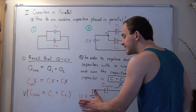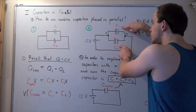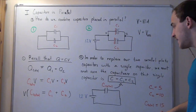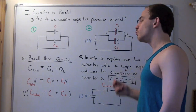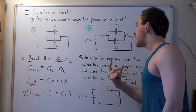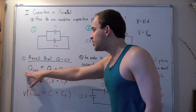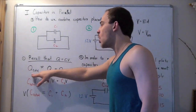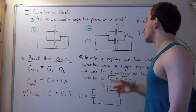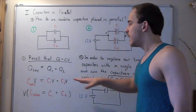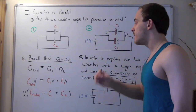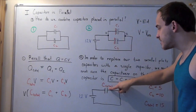My battery stays the same at 12 volts, and I replace the two capacitors with a single capacitor with C_total of 15. The voltage on this new capacitor remains V — the only things that change are the capacitance and Q total. Q total is larger than the charge on C1 plus the charge on C2 individually; you simply take the two charges, add them up, and you get the total charge on the equivalent capacitor.